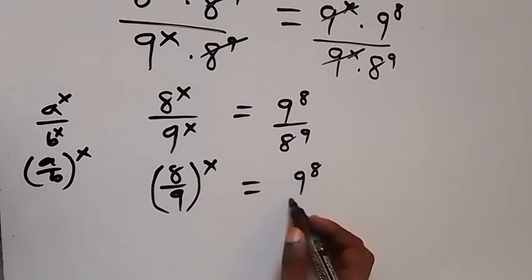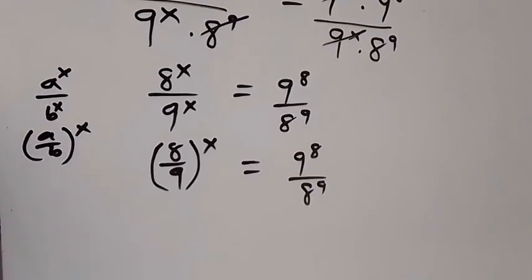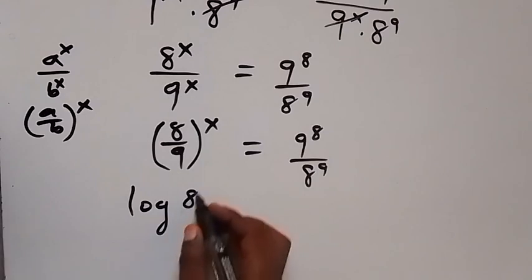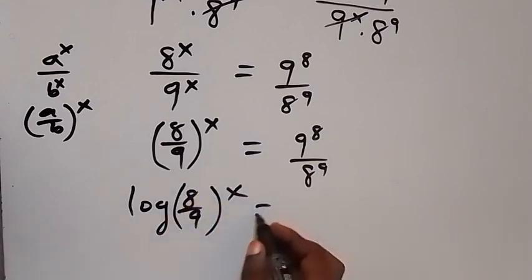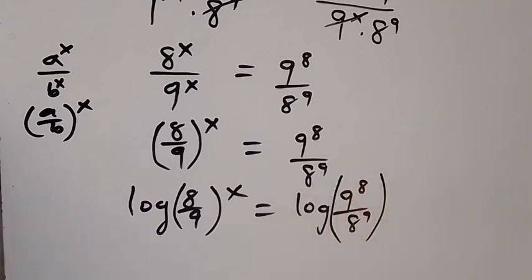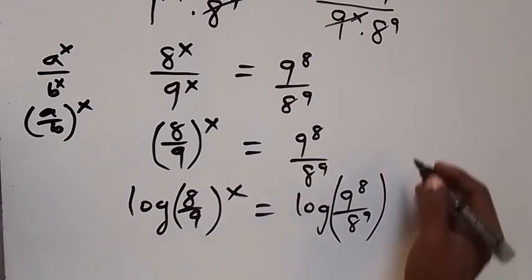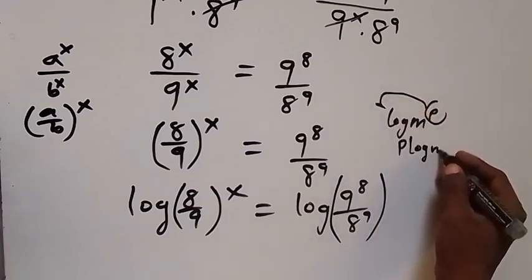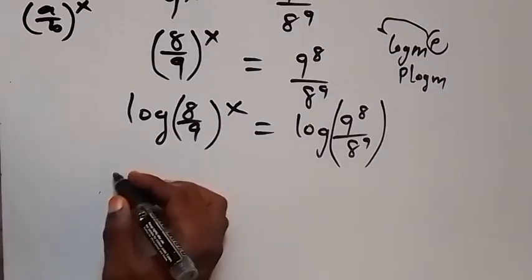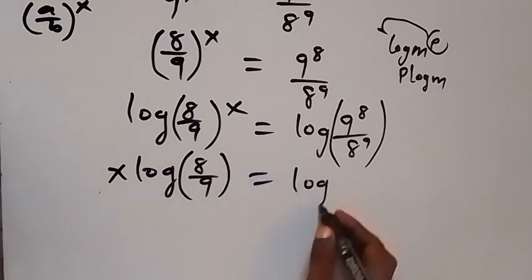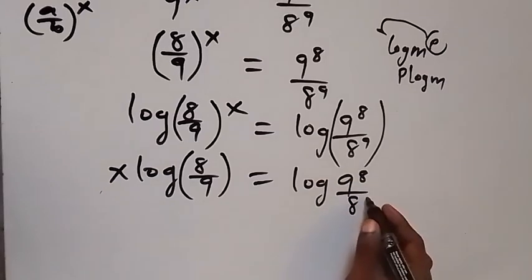Then equals to 9 raised to power 8 divided by 8 raised to power 9. We can introduce log on both sides — taking the log on both sides we have log of 8 over 9 all raised to power x equals to log of 9 raised to power 8 over 8 raised to power 9. From the law of logarithms, the power here can be taken to the front: when we have log m raised to power p, we can write it as p log m. So this will become x times log of 8 over 9.